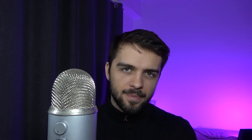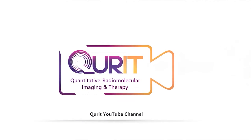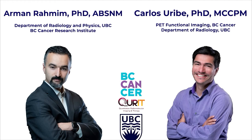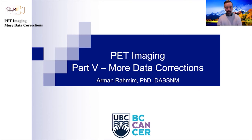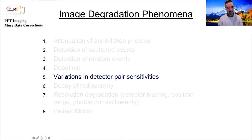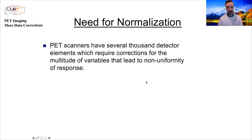In this short lecture we're going to move on to the last four of the eight phenomena that degrade image quality in PET. So let's talk about variations in detector sensitivity.